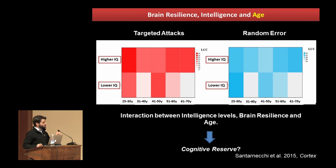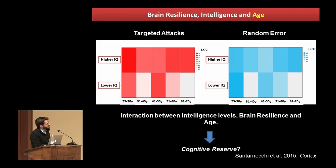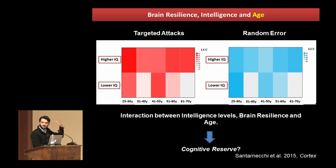What was really cool — and I was so stupid I put it in the supplementary materials, it should have been the first figure — is that if you divide our sample of about 130 subjects into higher and lower IQ groups, and also divide them by age decades, you see that lower IQ subjects show lower resilience as you increase age. At 61 to 70 years old, there's a huge difference in how the brain can still cope and function when you remove the same number of regions. This could be a major factor in the cognitive reserve model.